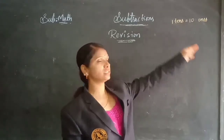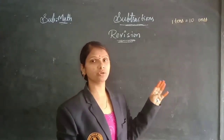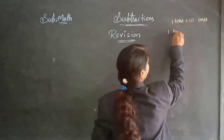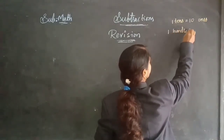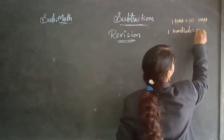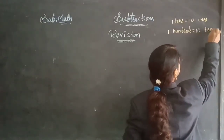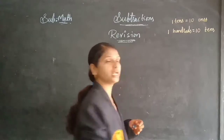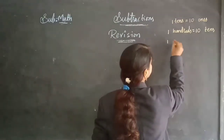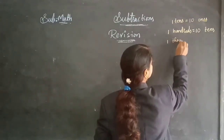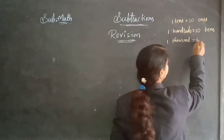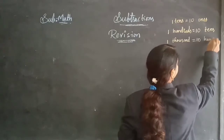One hundred is equals to ten tens, when you are shifting the borrow from hundreds to tens. Now, one thousand is equals to ten hundreds.